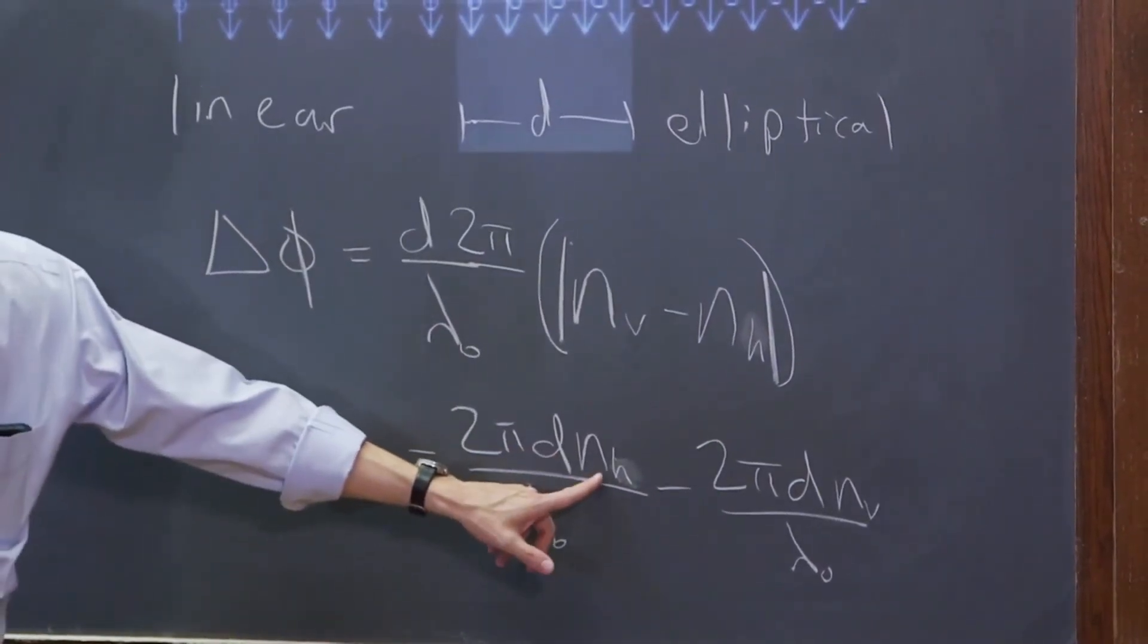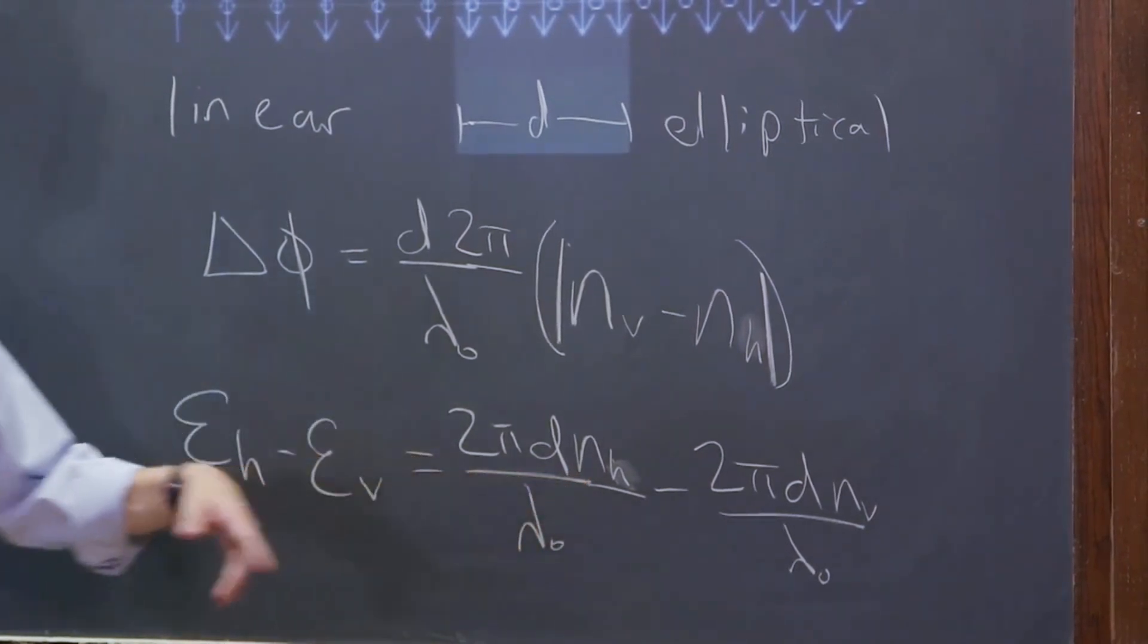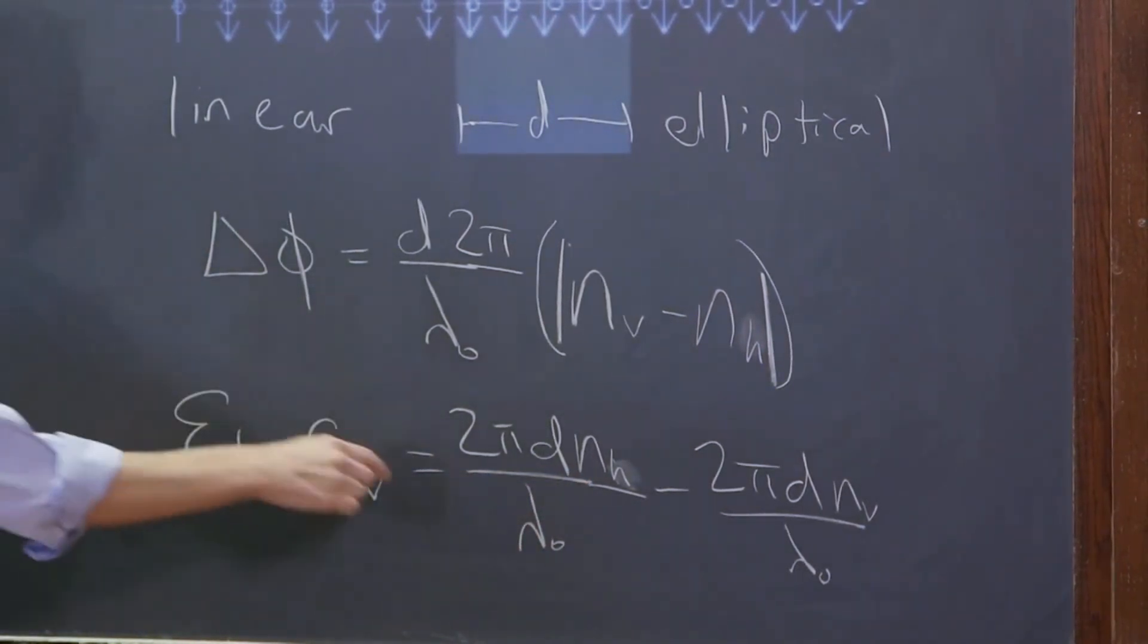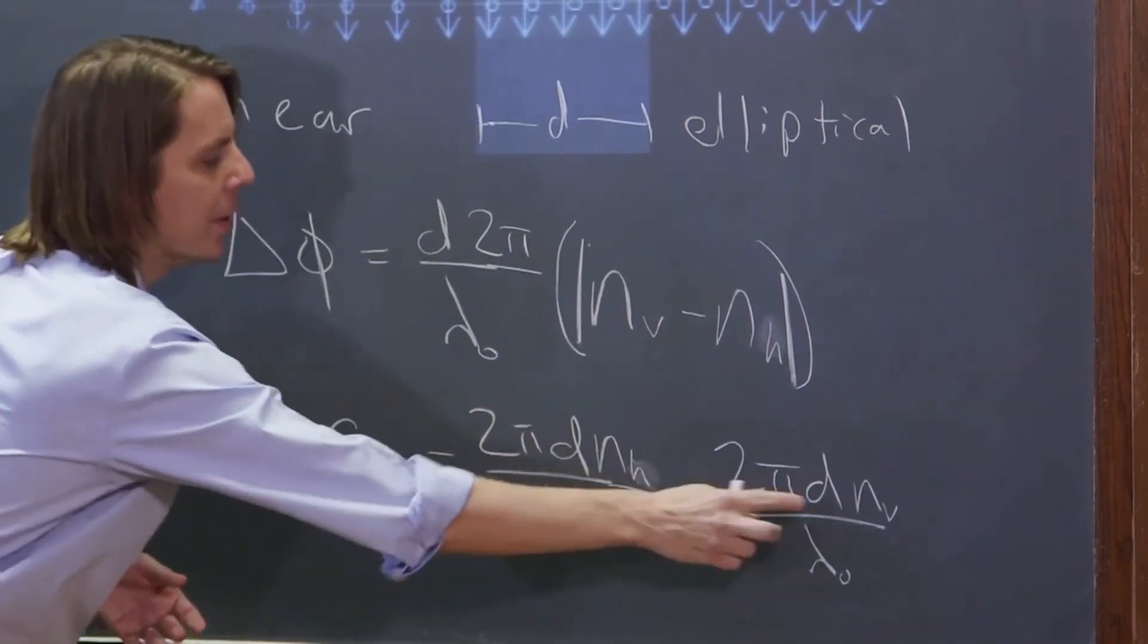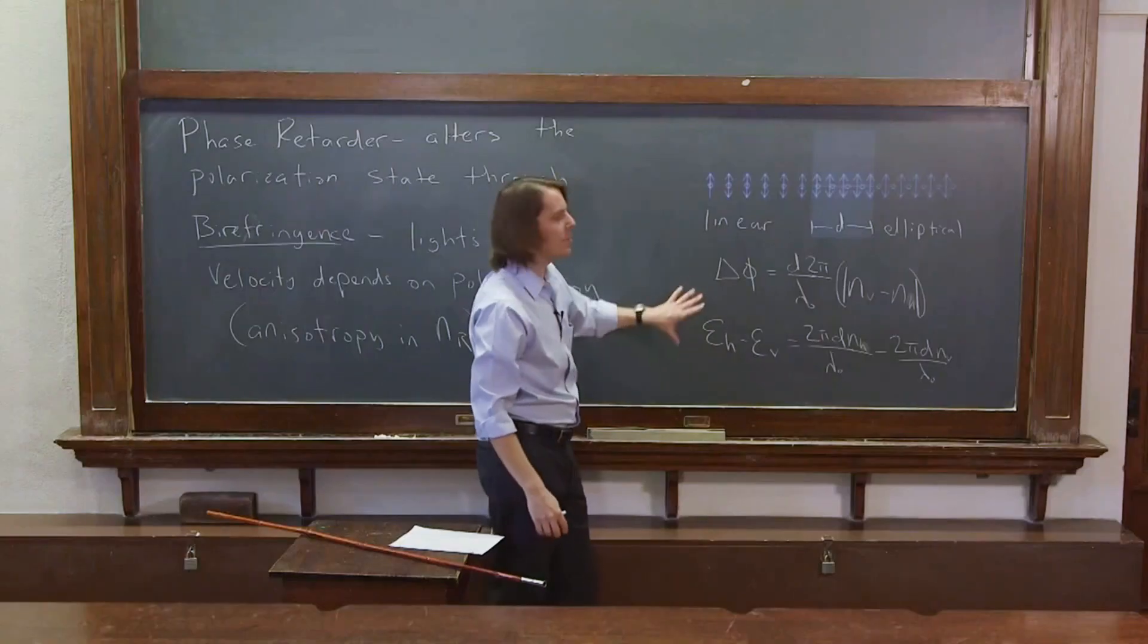And if you're wondering why did the n go in the top, remember that the wavelength essentially decreases. So instead of λ₀, the vacuum wavelength, it's λ₀/n. That's how you get those two numbers.